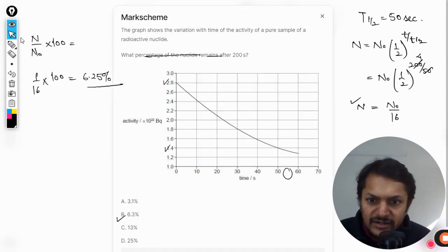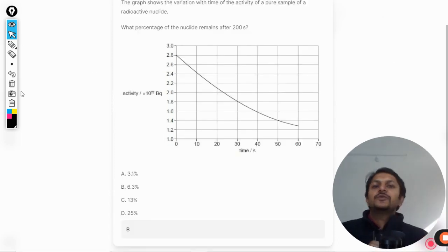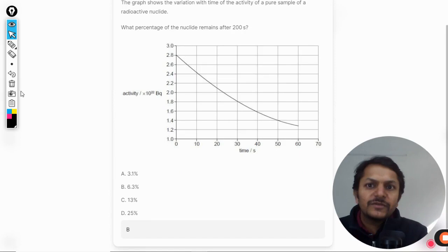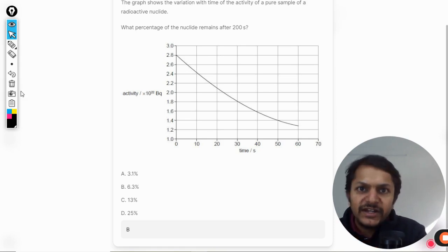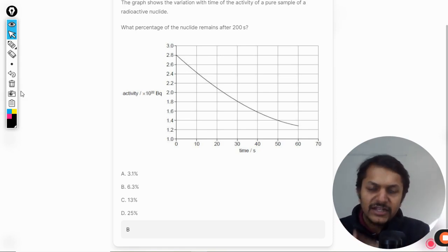Yes, the answer is B. So this is how we do this question. Please watch the video again to completely understand what is happening here. The graph talks about the activity, but the question is about the number of nuclei. That is why we are having two things here, and we are going to relate both of them.